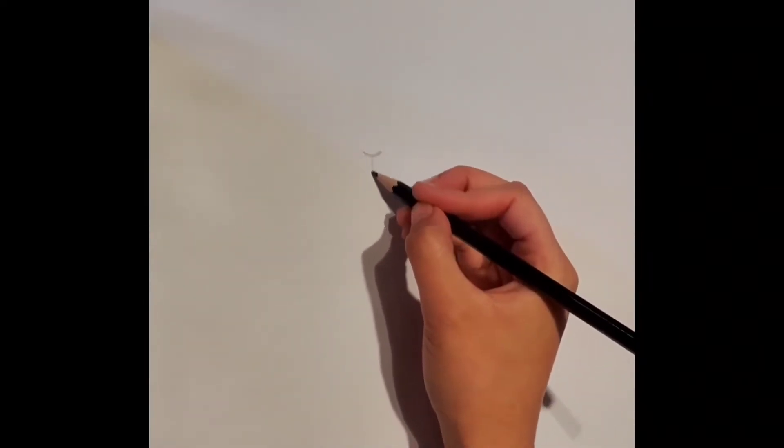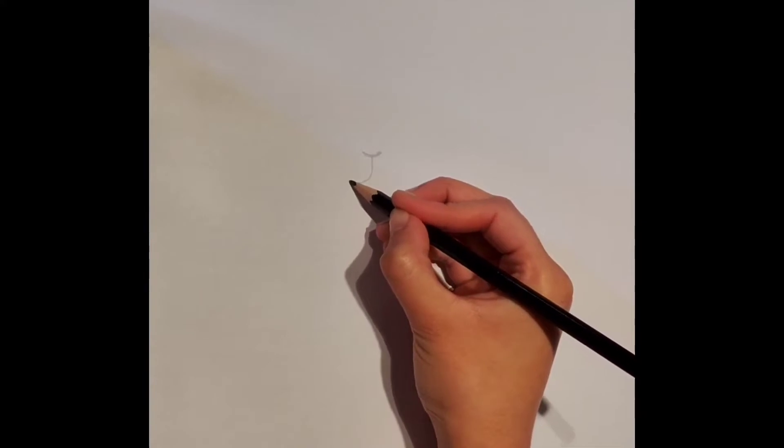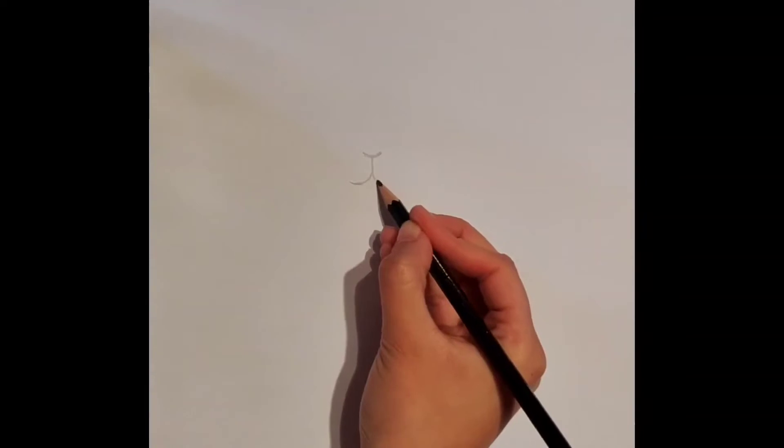First, we are going to start off with the nose. Draw a little tiny curve like so. Now, draw a vertical line downwards and then create a little mouth by drawing two curves on both sides.